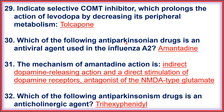Question thirty: the anti-parkinsonian drug that is also an antiviral agent used in influenza A2 is amantadine. Question thirty-one: the mechanism of amantadine action is indirect dopamine-releasing action, direct stimulation of dopamine receptors, and weak antagonism of the NMDA type of glutamate receptor. Question thirty-two: the anti-parkinsonism drug that is an anticholinergic agent is trihexyphenidyl.